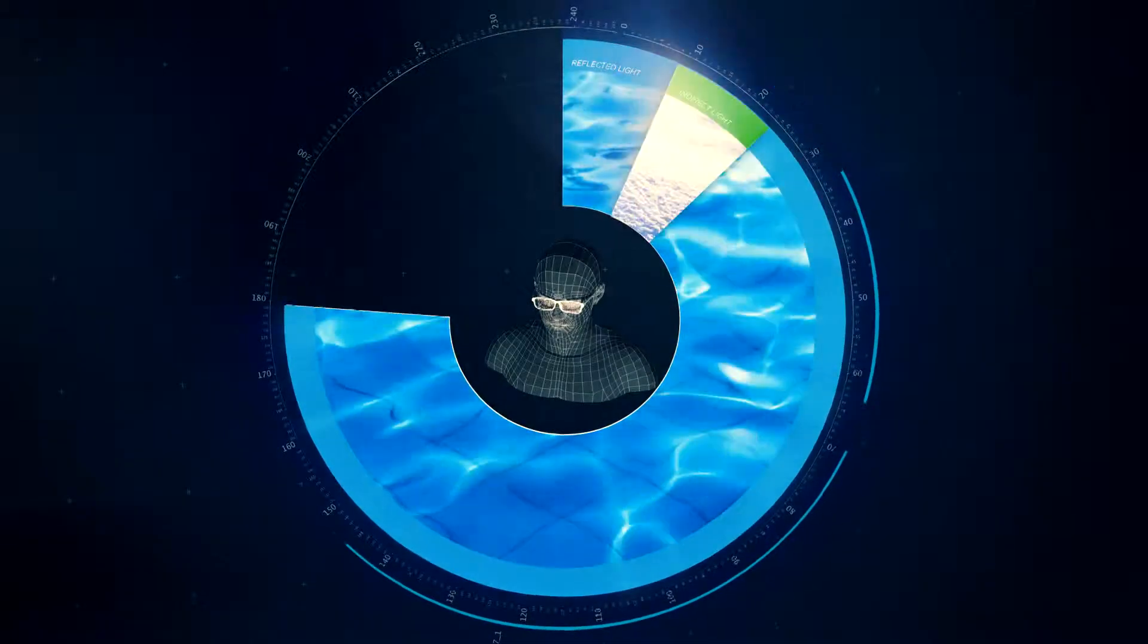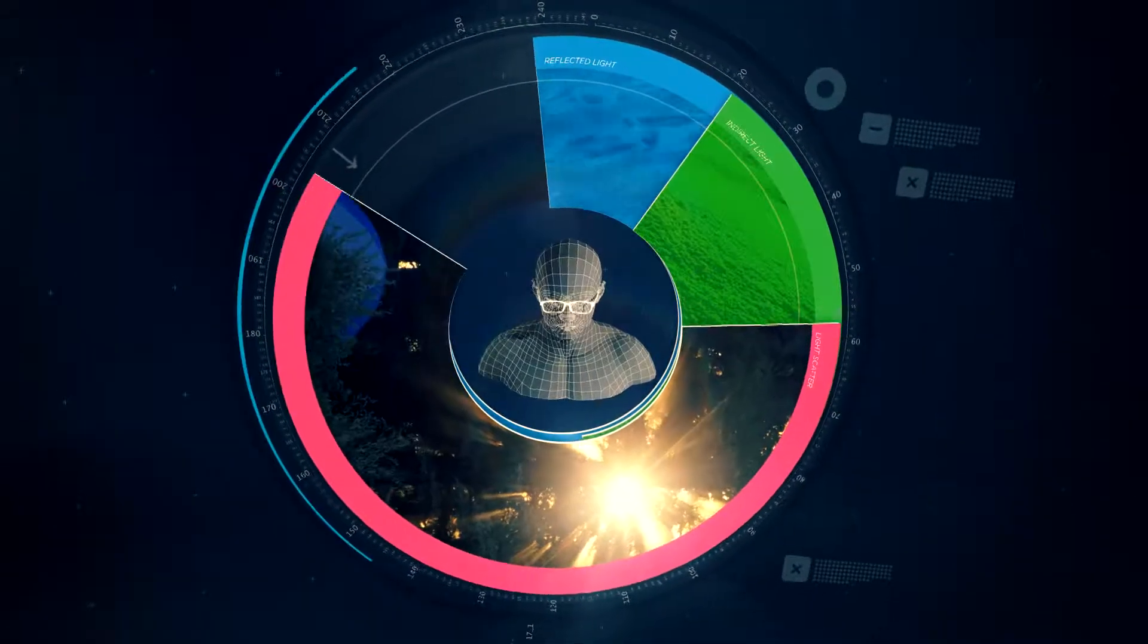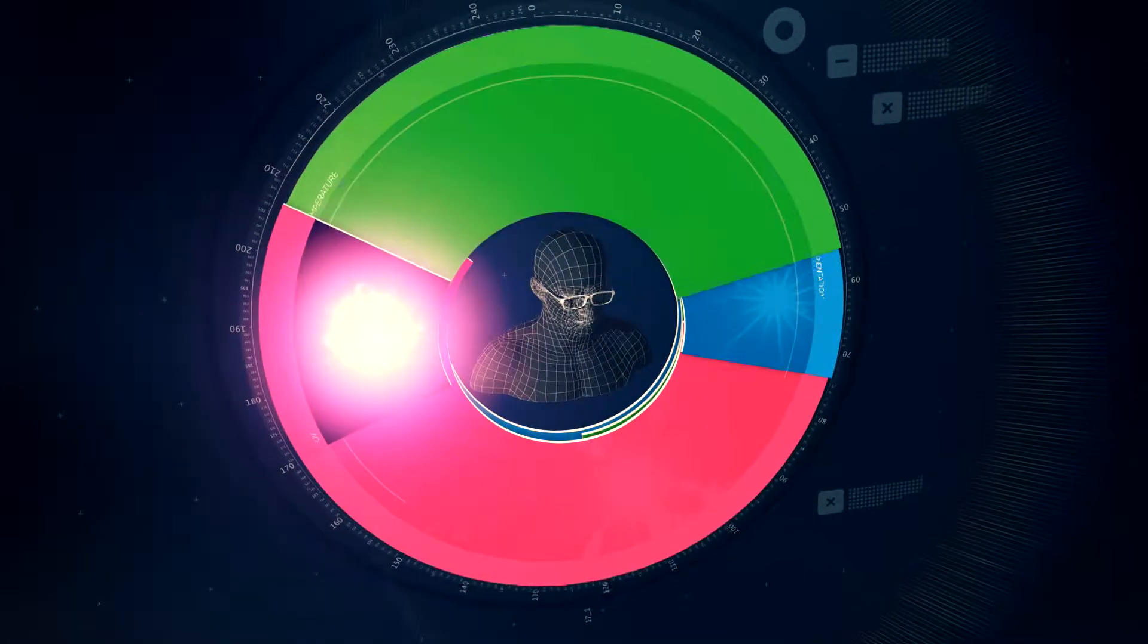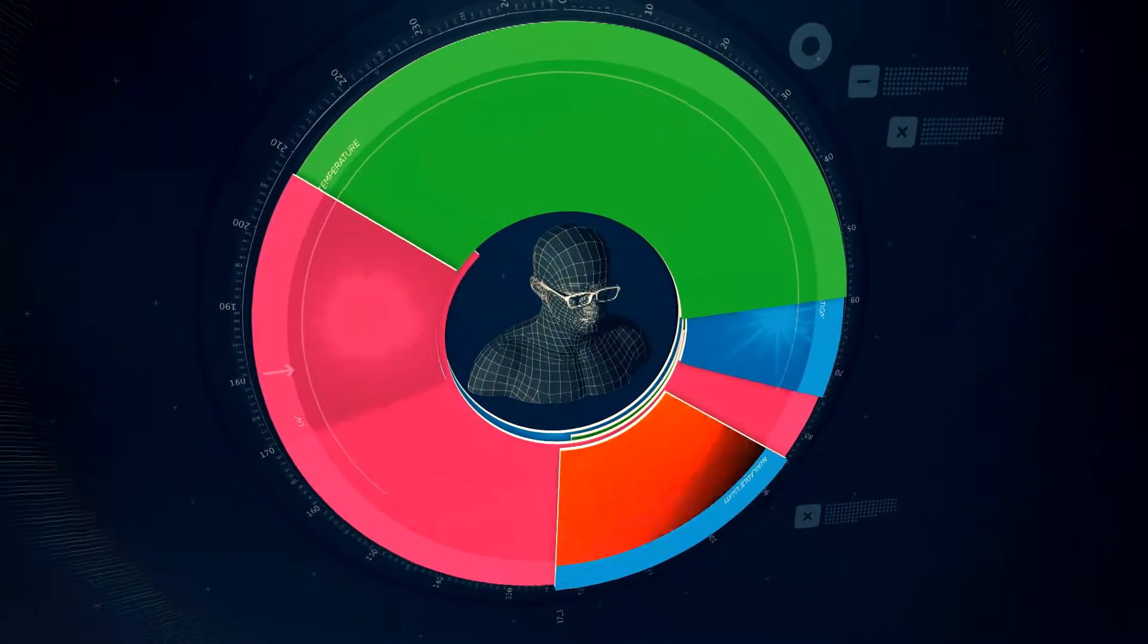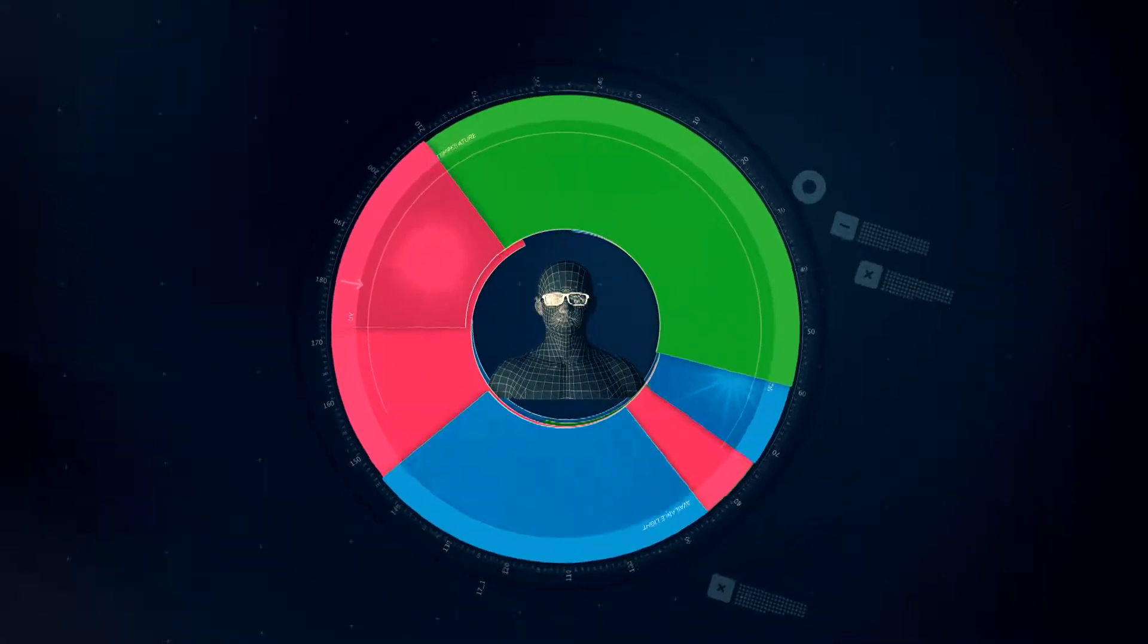Reflected light, indirect light, light scatter, lens orientation, temperature, level of UV, and available light all impact vision and lens performance.